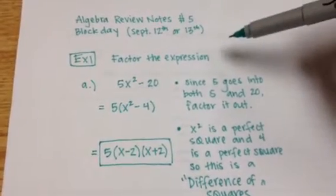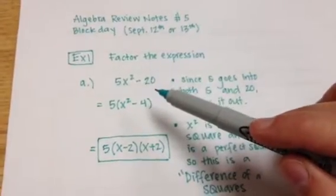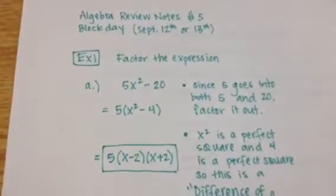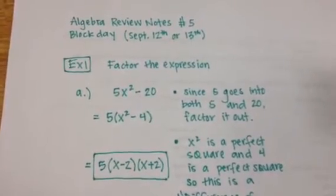We're going to be doing some factoring today. So for the first example, we have 5x squared minus 20. Now, please make sure on these notes that you write down everything you see. So anything on the paper, you have to write down also.